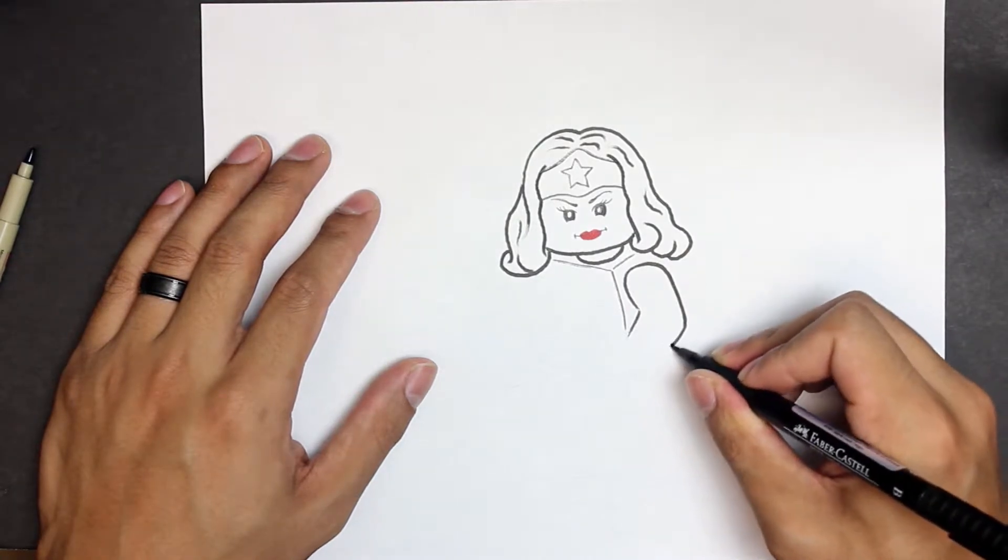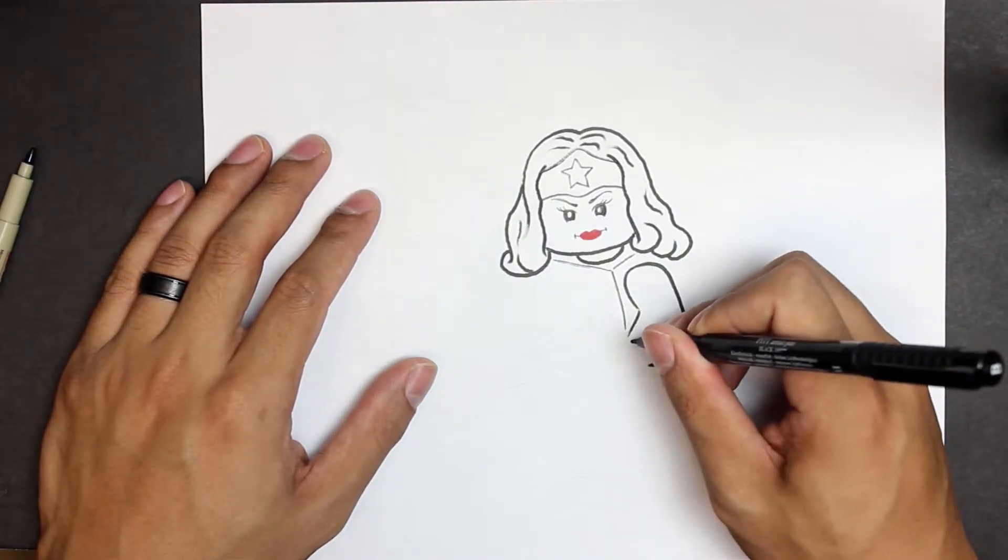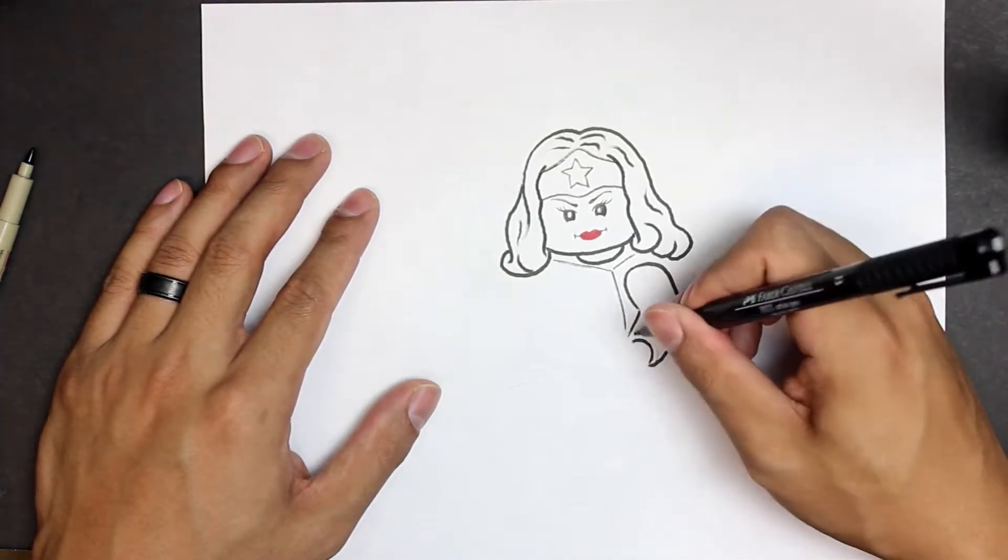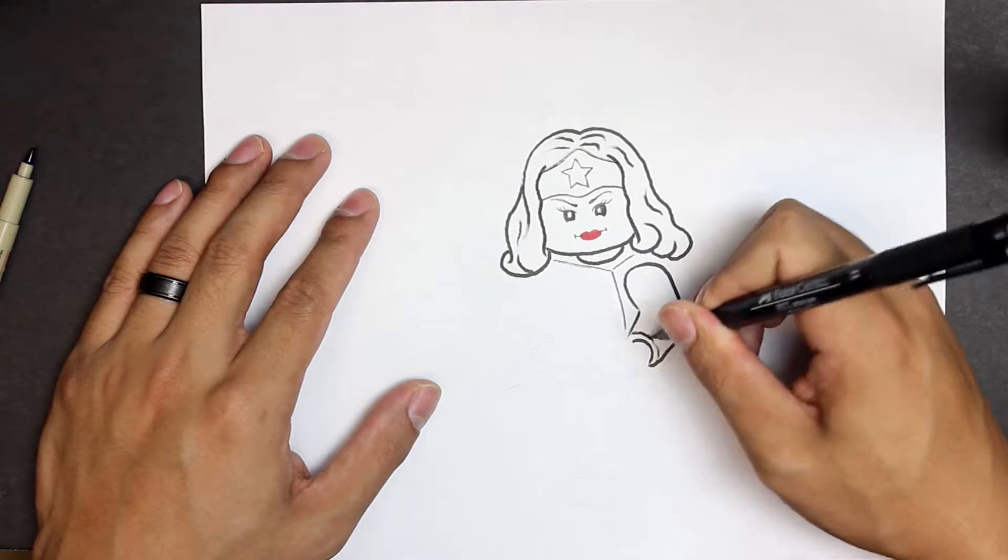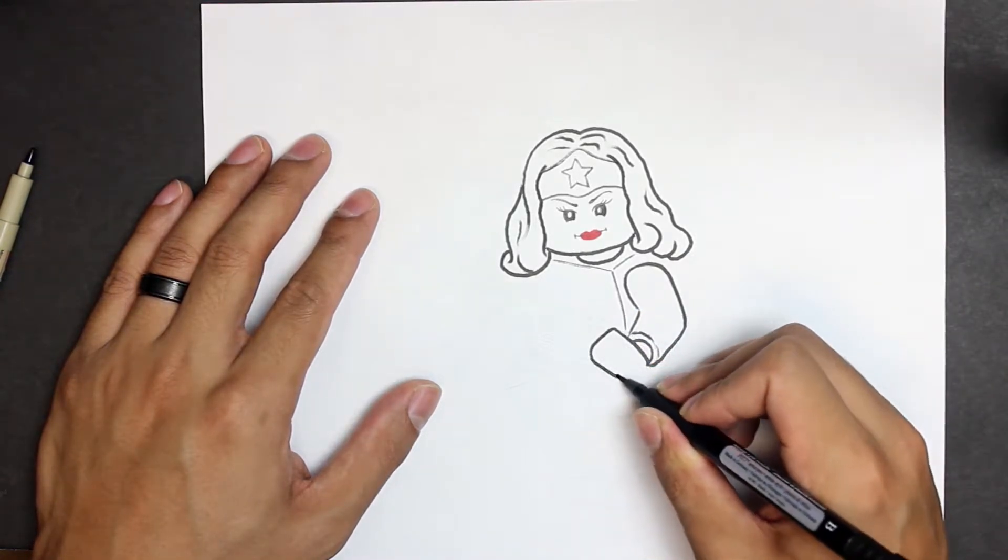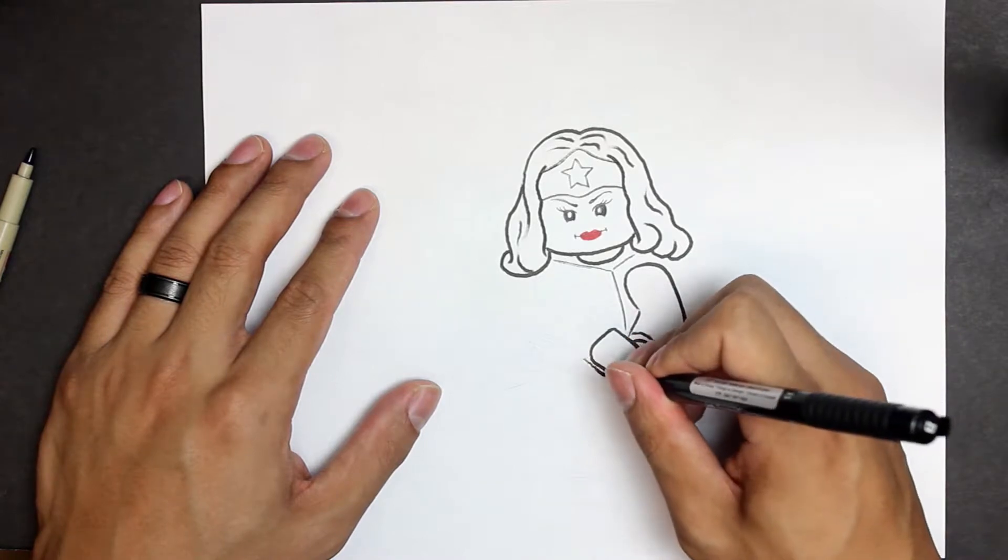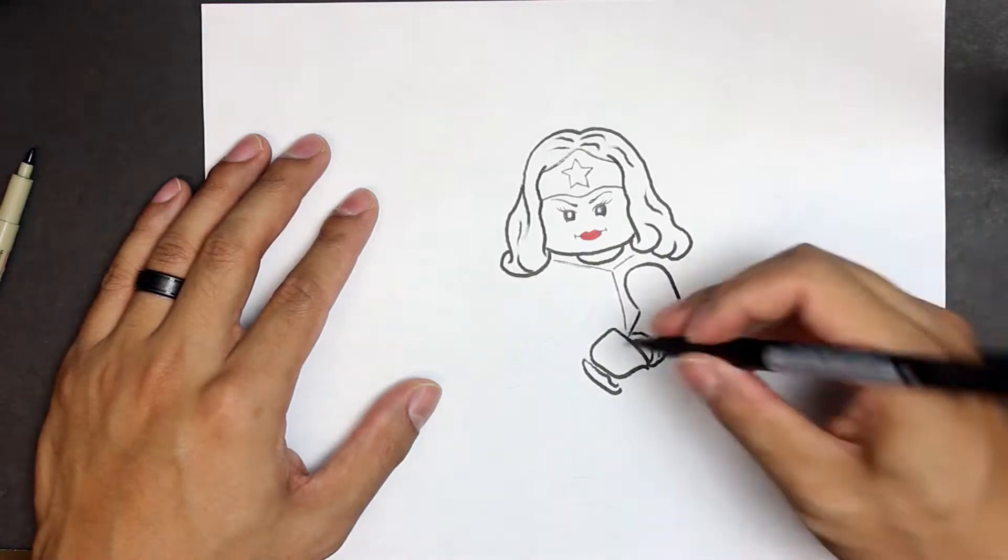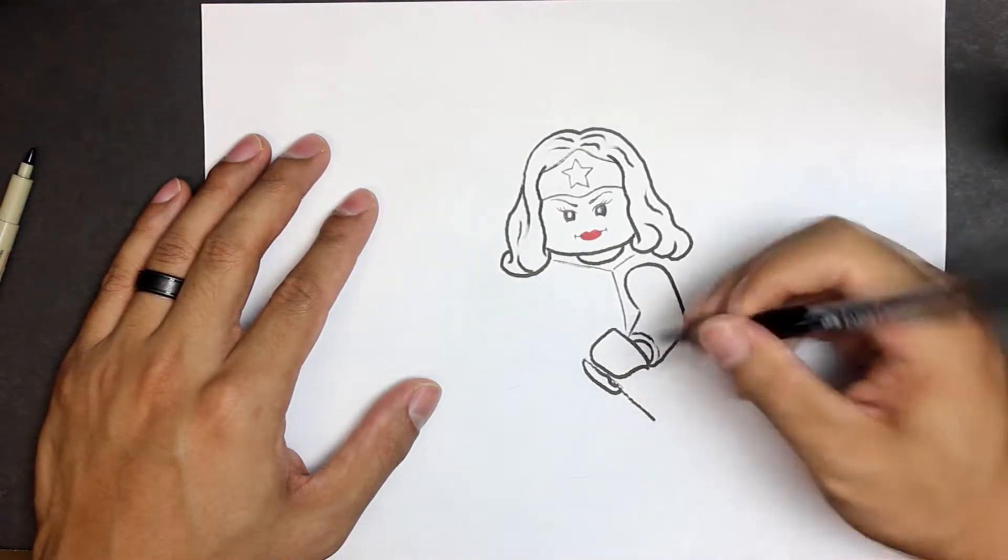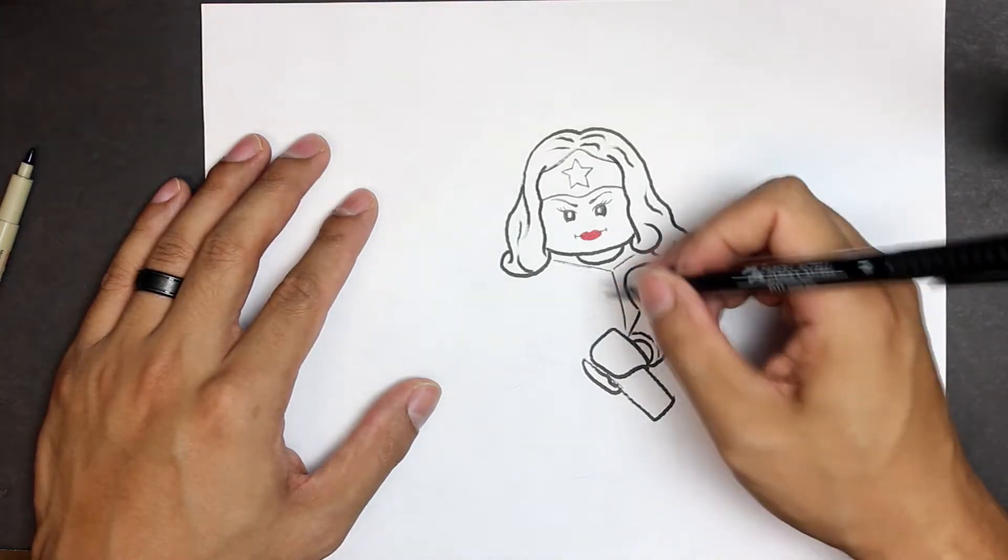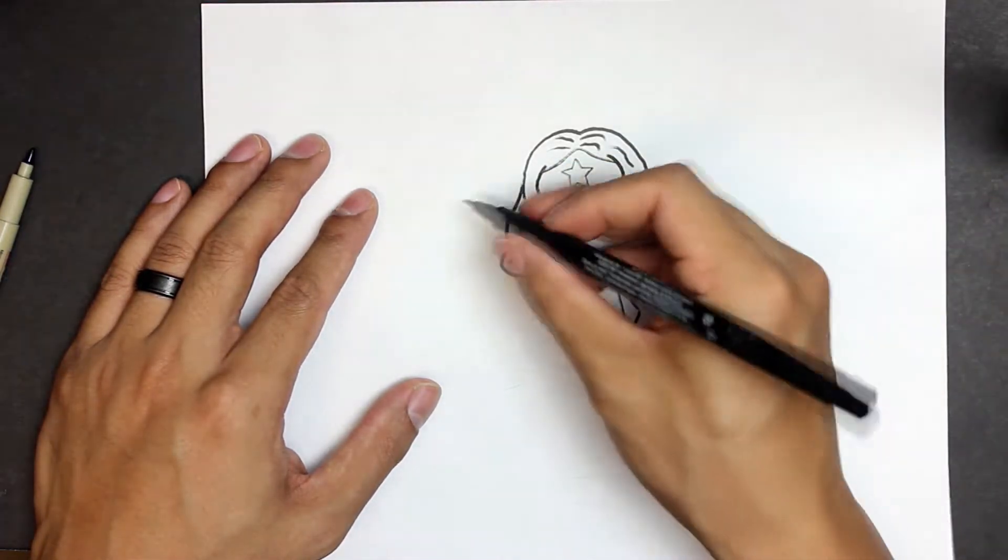Then we move on to the Pip Pen to emphasize that thicker line. Her hand's going to be grabbing her lasso of truth. If you guys didn't know, her lasso of truth does have a double function. It can tell anyone, have anyone tell the truth. Most kids that aren't used to the series and this character might not know that.